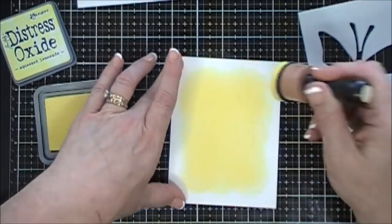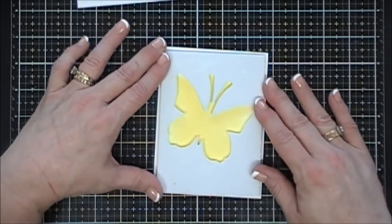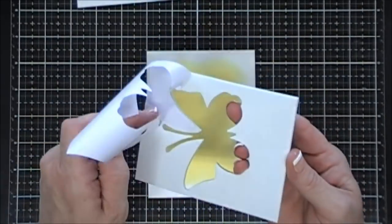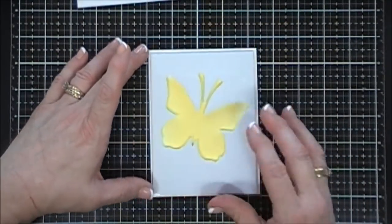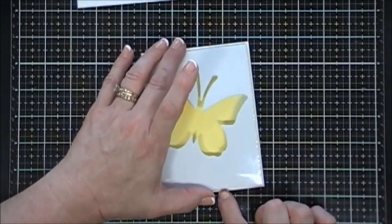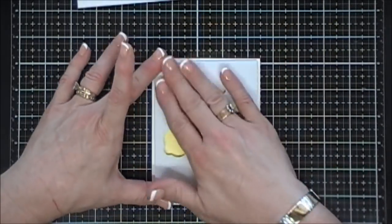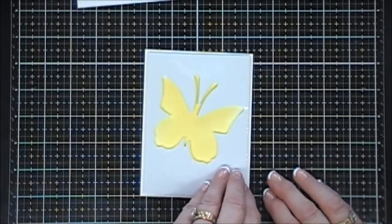I'm being careful not to go along the edges because I want the edges of my card base to be white. Now I'll just remove the release paper off of my foam front here and we're going to place that in the center of our card base. Lovely.